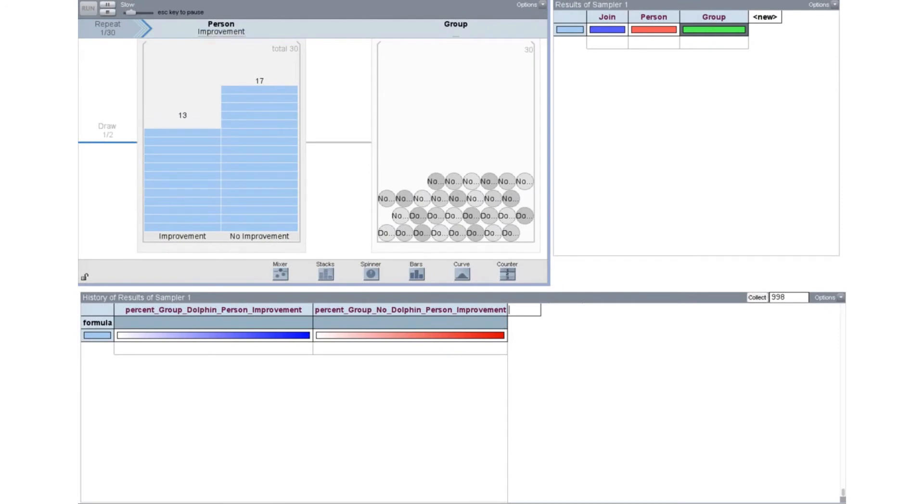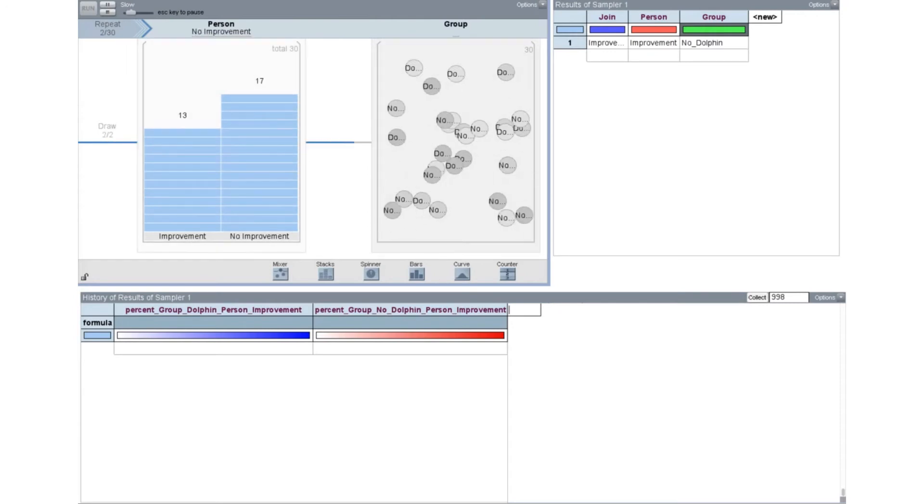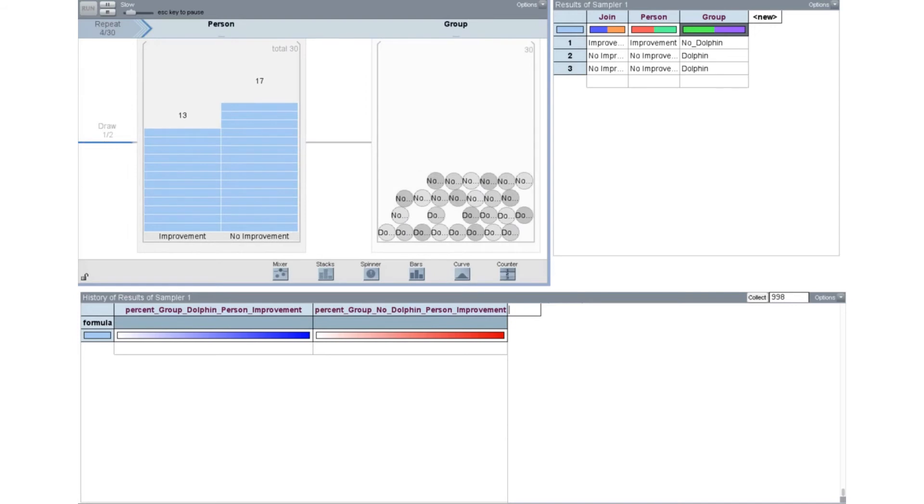Now let's watch this process of repeated random assignment. The computer selects a person and then randomly assigns them to a group. Then it selects the second person and randomly assigns them to a group. We're assuming the treatment has no effect, so each person is either going to improve or not, regardless of which group they were randomly assigned to.